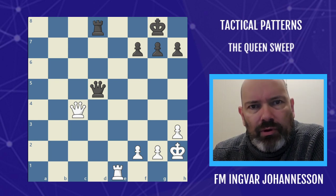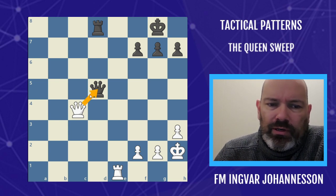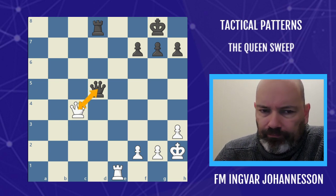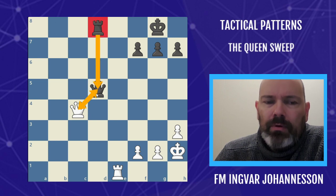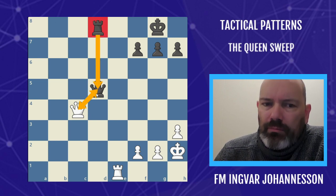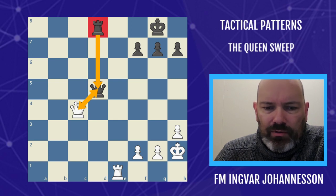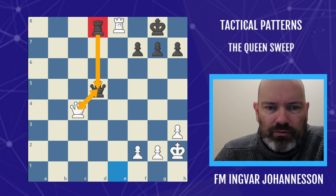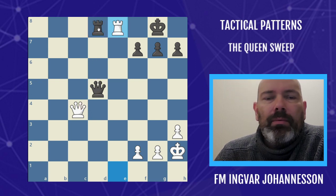This is the typical situation where we find this pattern. There's a tension between the Queens, and the Queen is only defended by a rook. This is the worst case scenario for black because his move is absolutely forced. What we do is play the rook to the back rank and sweep away the defense.